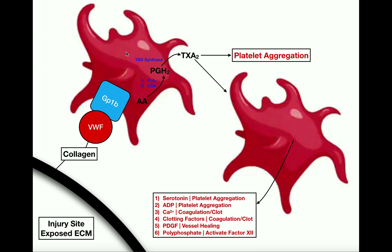As soon as a platelet binds to von Willebrand Factor, glycoprotein 1b changes conformation and initiates a series of activities inside the platelet, triggering platelet aggregation. The initial sticking of the platelet to the vessel wall where it was damaged is called platelet adhesion, while platelet aggregation is when a platelet sticks to another platelet.